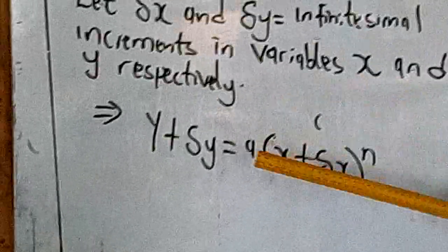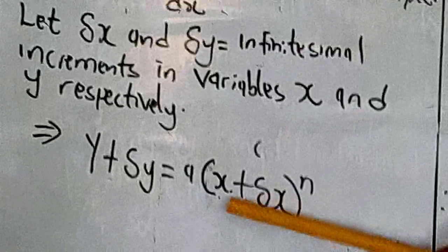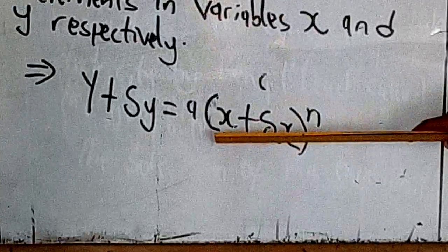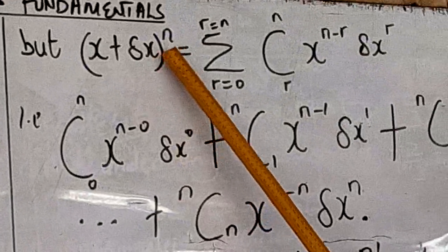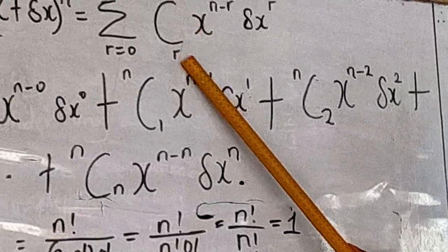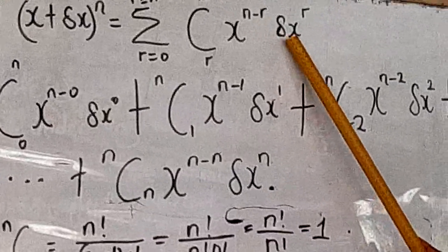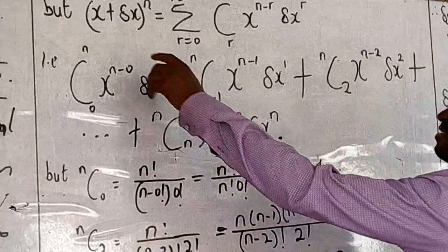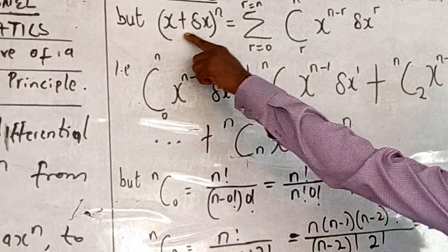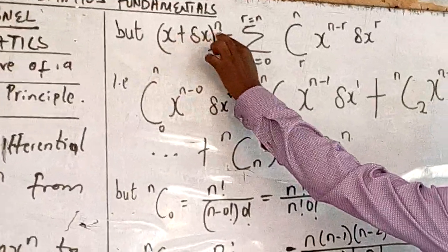So y plus delta y equals a times (x plus delta x) raised by n, because a is a constant outside — it's only x that is increasing, so we leave a as a constant. Now, the expression (x plus delta x) raised by n — from the Binomial theorem — we know that (x plus delta x)^n equals the summation of n-combination-r times x^(n−r) times (delta x)^r.